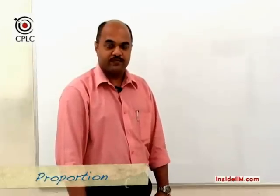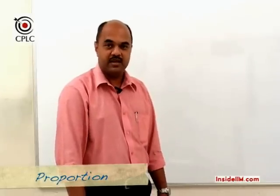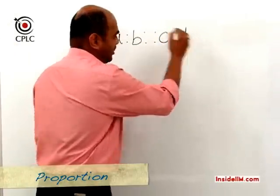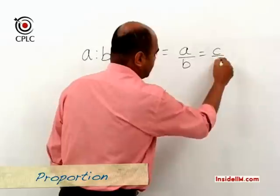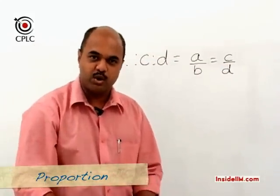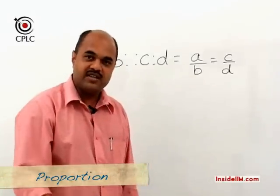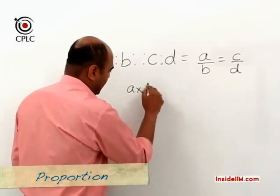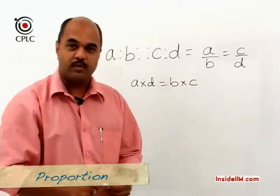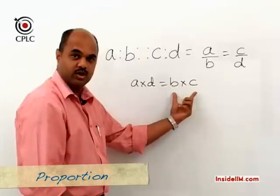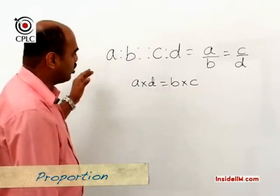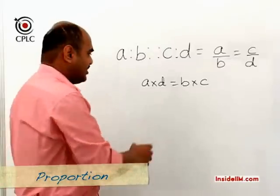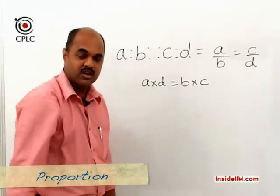What do we mean by proportion? If four terms A, B, C, and D are in proportion, it simply means A/B = C/D. If we cross-multiply we get A×D = B×C. This is commonly referred to as 'product of the means is equal to product of the extremes.' The two end terms A and D are the extremes, and the two middle terms B and C are the means.